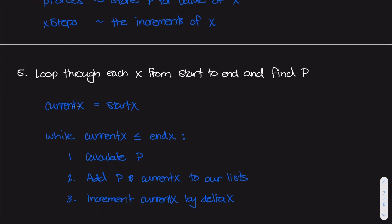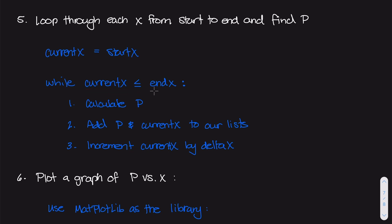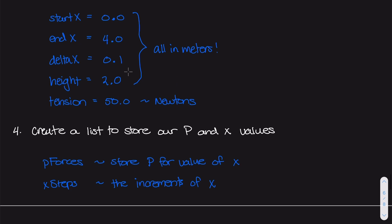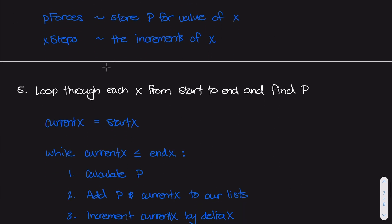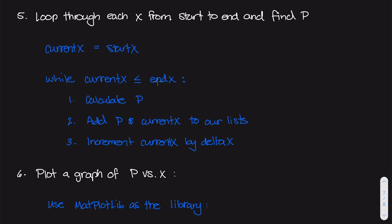The next step is really the heart of this algorithm: we need to loop through each value of x from start to end and find a value of P for each current x. We use a while loop — while some condition is true, execute this block of code. Our condition is: current x is less than or equal to end x. Current x is initialized to start x, which has a value of zero. So while zero is less than or equal to four, run this block of code.